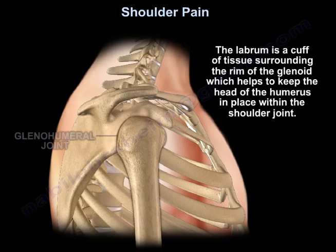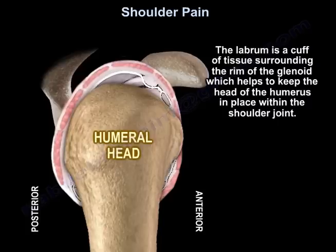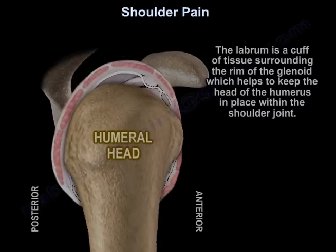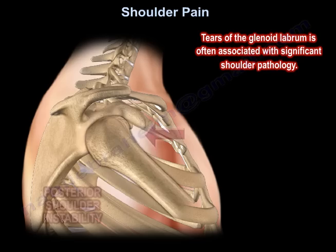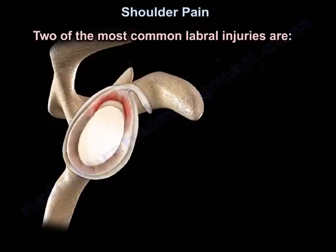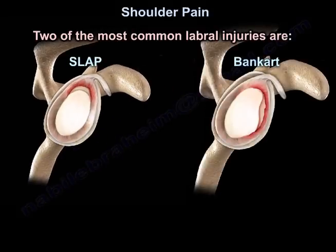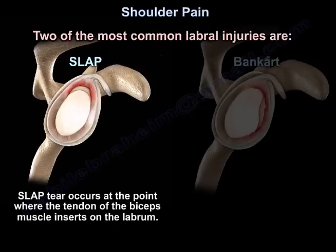The labrum is a cuff of tissue surrounding the rim of the glenoid, which helps to keep the head of the humerus in place within the shoulder joint. Tears of the labrum are often associated with significant shoulder pathology. Two of the most common types of labral injuries are the SLAP tear and the Bankart lesion. The SLAP tear is not common and it is difficult to diagnose. It occurs at the point where the tendon of the biceps muscle inserts on the labrum.